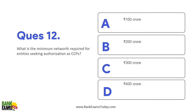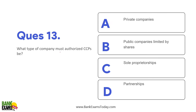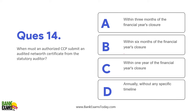What is the minimum net worth requirement for entities seeking authorization as Central Counterparties (CCPs)? 300 crore rupees is the minimum net worth requirement. Which type of company must be authorized as a CCP? It should be a public company limited by shares. An authorized CCP must submit an audited net worth certificate from the statutory auditor within six months of the financial year closure.